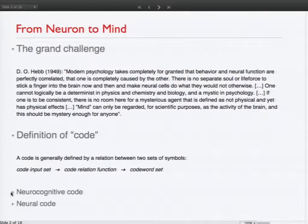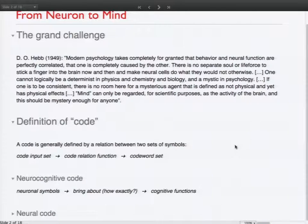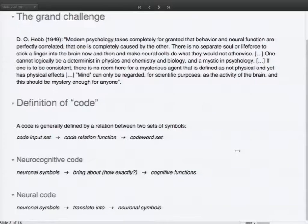Applied to your neurocognitive code, this would be the neuronal symbols that bring about in whatever way cognitive functions. And the neural code would be neuronal symbols that somehow translate into other neuronal symbols on the level of brain activity. And this is what we are after and what we are looking for. And if we find these symbols, we can somehow maybe write them to cognition and say something about how the brain works.